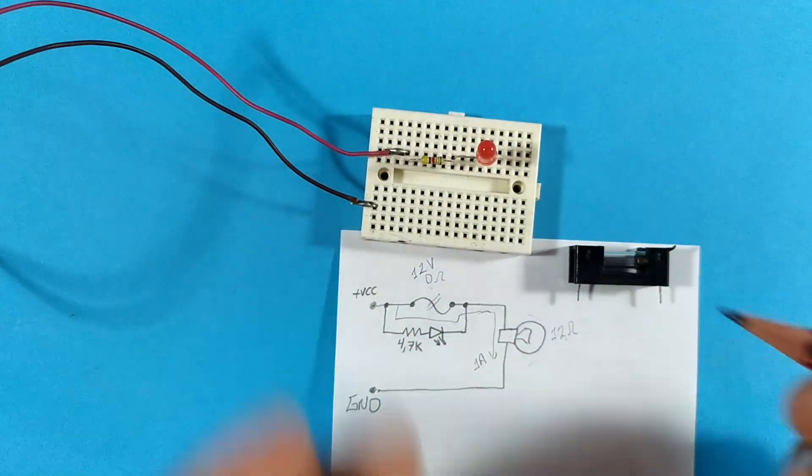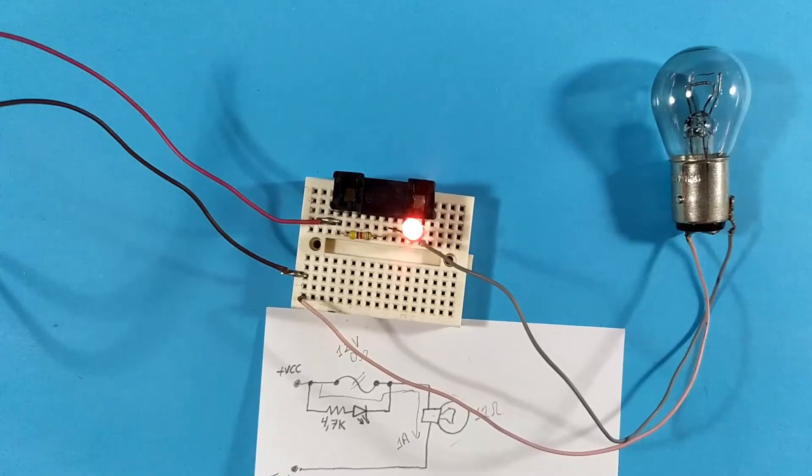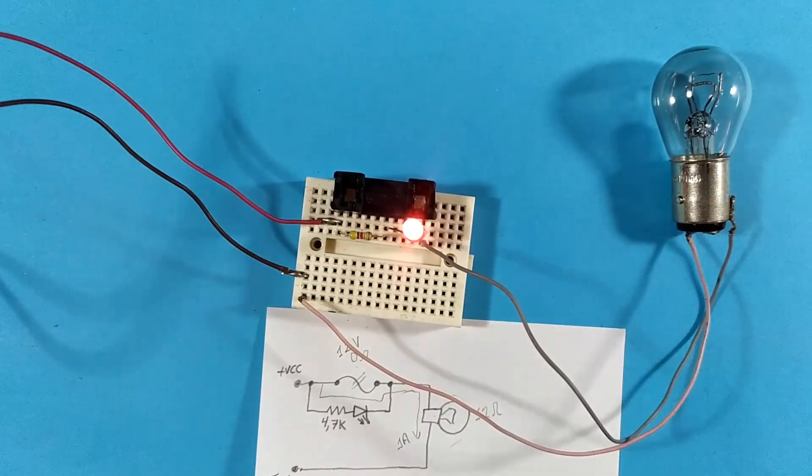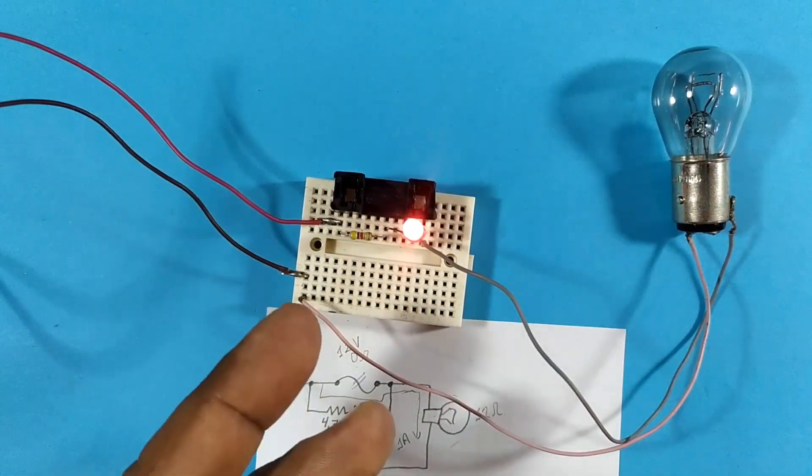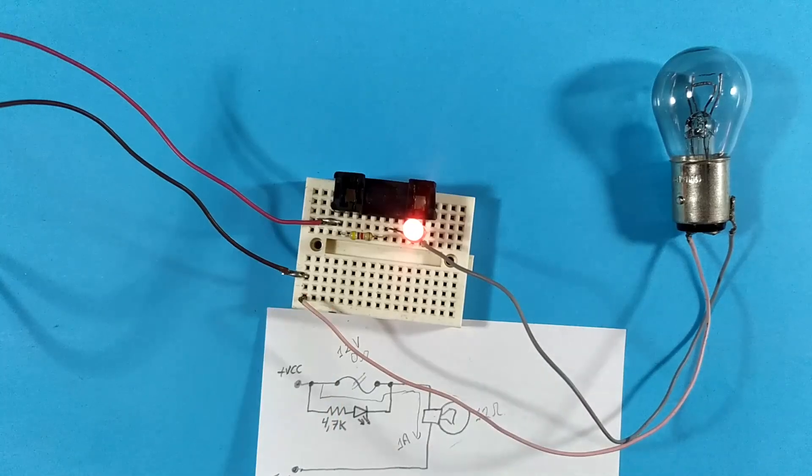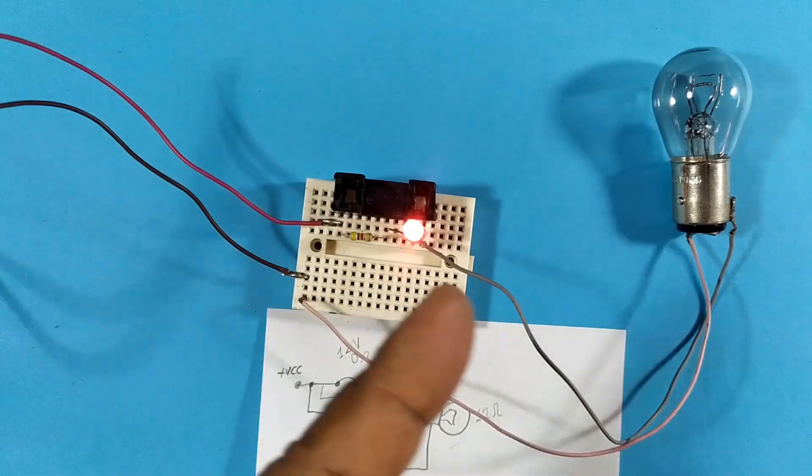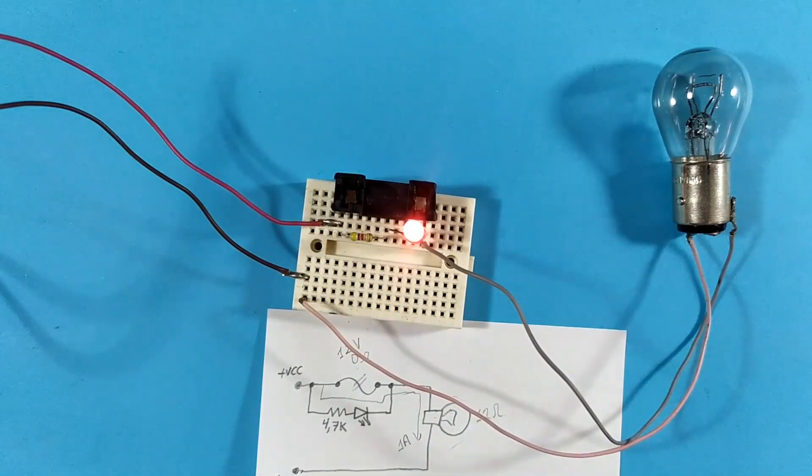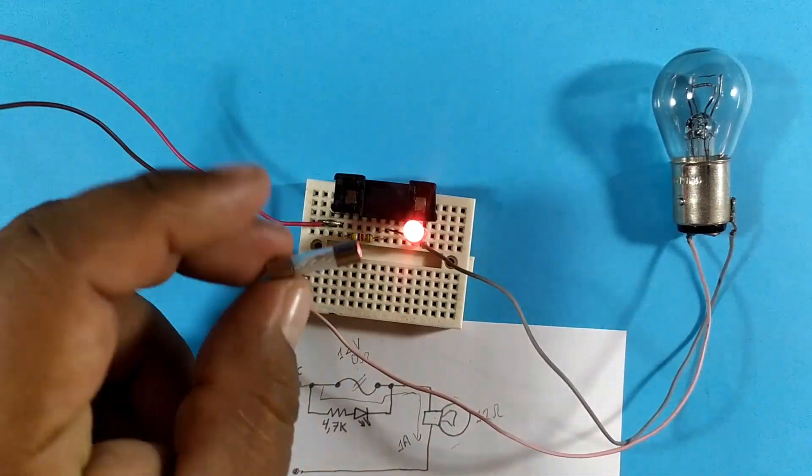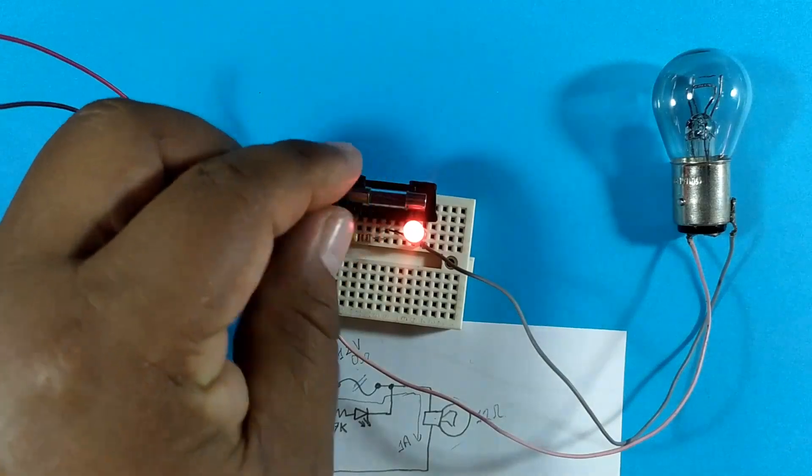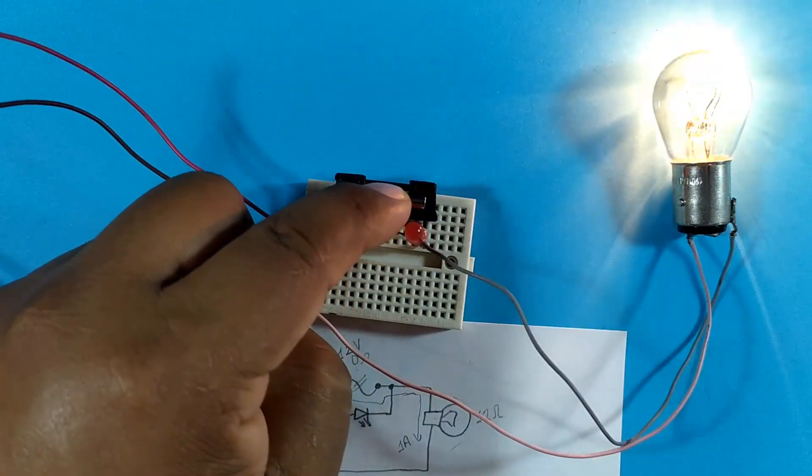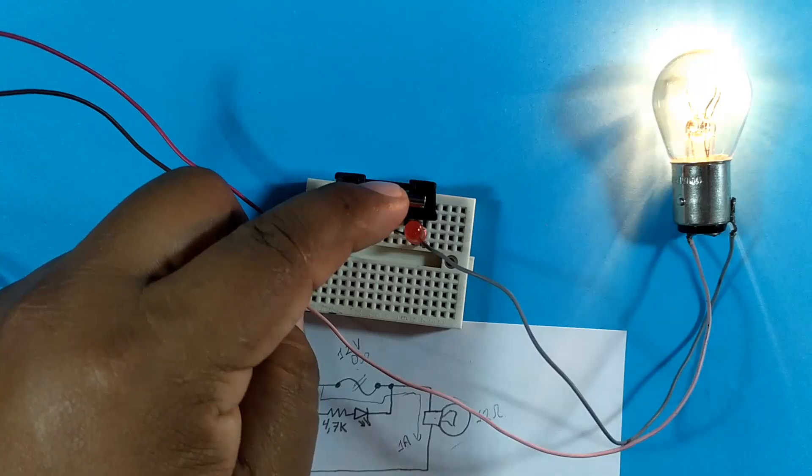Well now let's see it in practice. Alright guys, there we have it. At this moment there is no fuse, so the LED is telling us that something happened with the fuse. Take into account that this circuit is for direct current. If the fuse is in good condition, our LED turns off and the light bulb turns on.